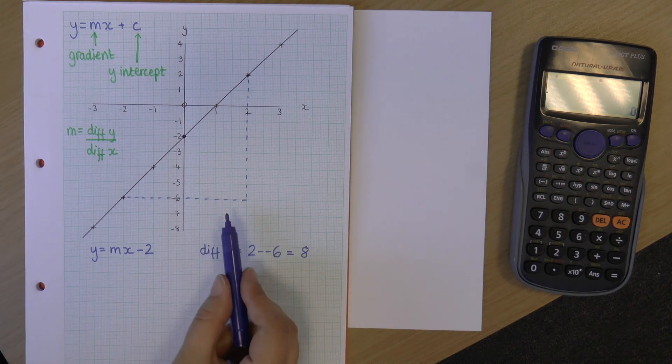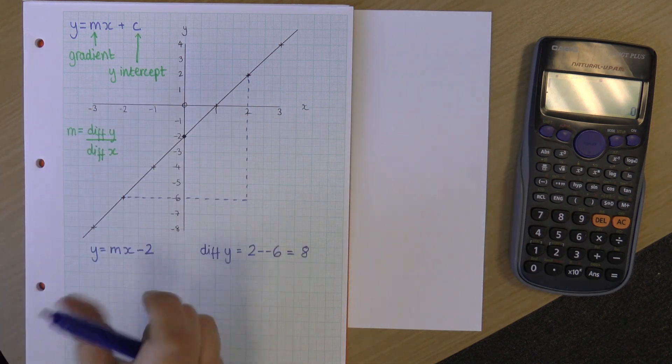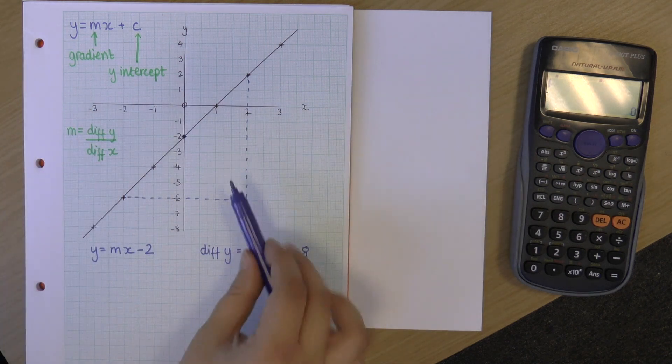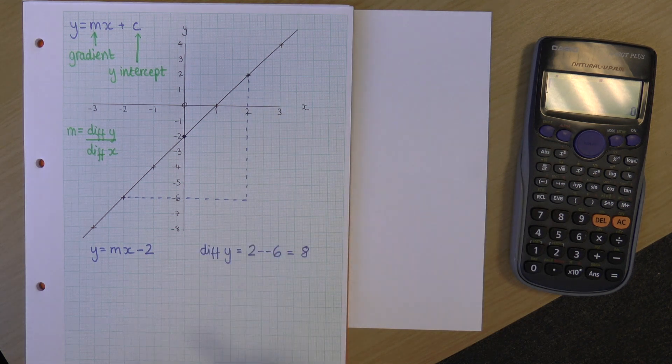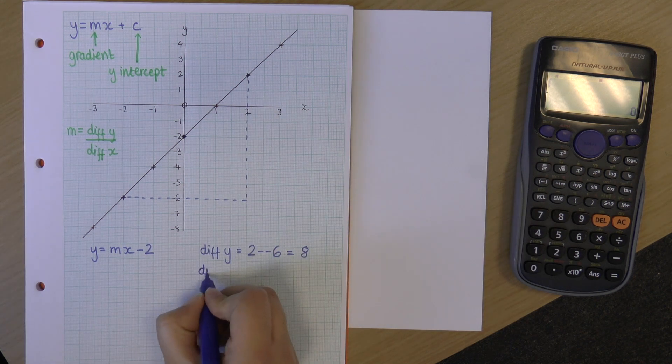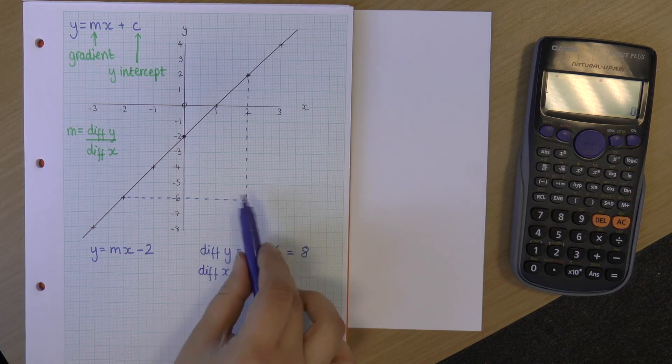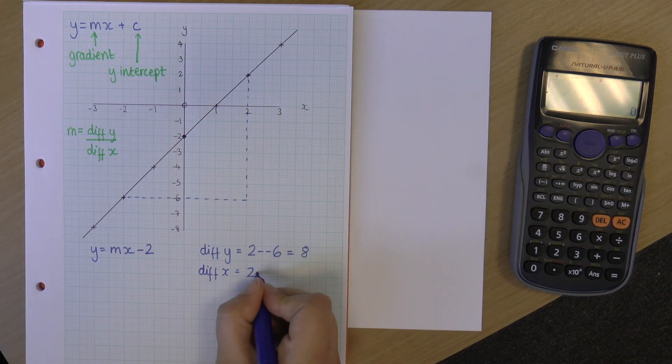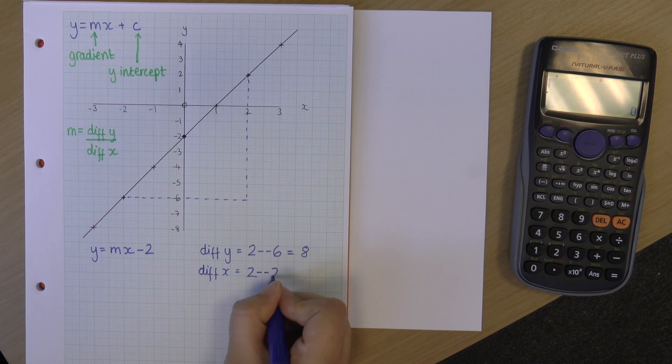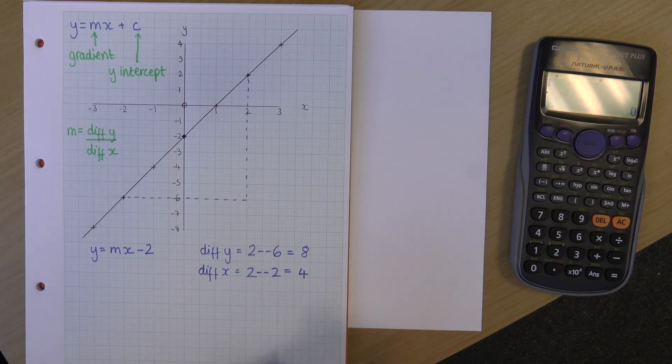Now, my difference in x is along here. So, it's parallel to the x-axis. Now, this goes from here, which is an x value of 2. So, my difference in x goes from a value of 2, 2 over here, which has an x value of minus 2. So, 2 minus minus 2. And that is 4.